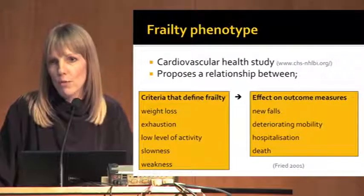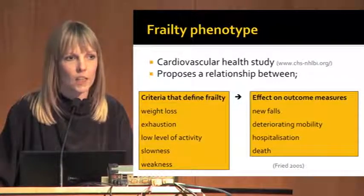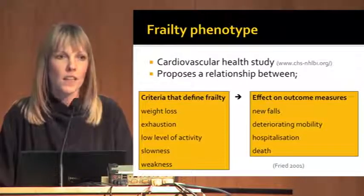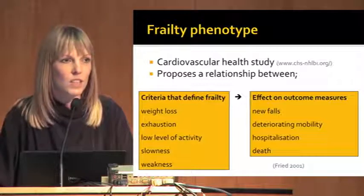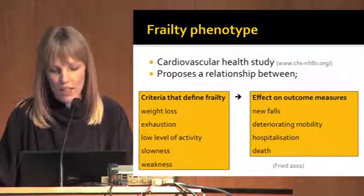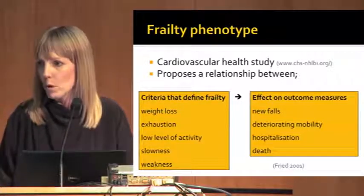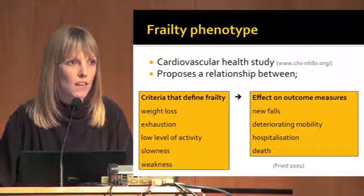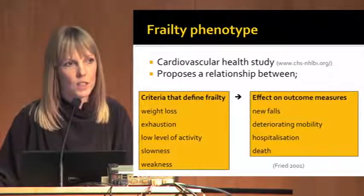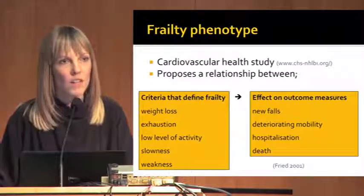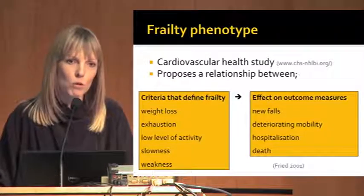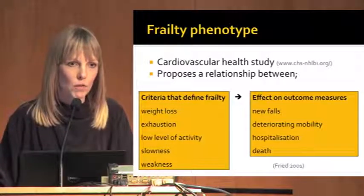To recap on the models of frailty described in the geriatric literature over the last 15 to 20 years - both the frailty phenotype and the frailty index were described from very large population-type databases where a huge number of variables were collected longitudinally in older patients. The frailty phenotype describes five frailty-defining criteria and looks at the effect these criteria have on outcomes such as falls, poor mobility, hospitalization, and death. Fried originally described it in three categories: none of the five criteria meant robust and non-frail; one or two meant pre-frail; and three or more meant frankly frail. It's a categorical type score.